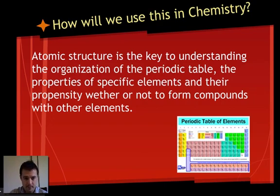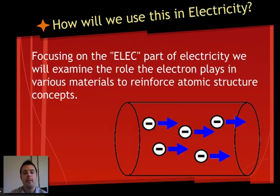When we think about how we are going to use this, in chemistry, we use the atomic structure as the key to understanding how the periodic table is organized, the properties of specific elements, and the propensity to form compounds with other elements or not form compounds. When we think about how we use this in electricity, we are going to be using this to look at the electron part of electricity. We are going to examine the role that electron plays in various materials to see if we can use that knowledge to really understand what is happening in the areas of both static and current electricity.